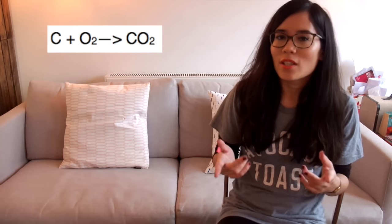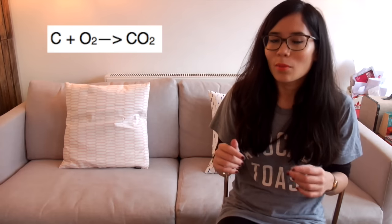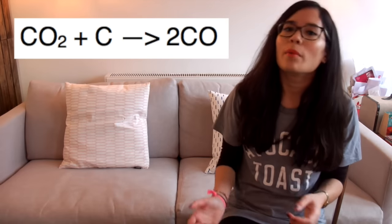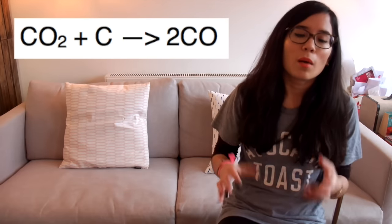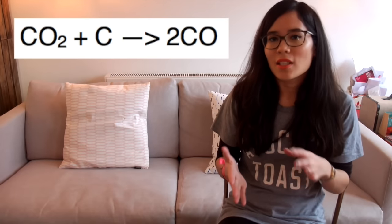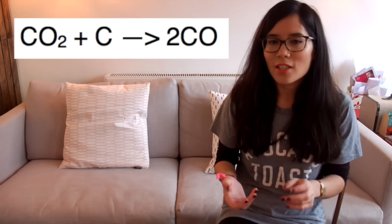It's important that you learn these equations — the balanced symbol equations especially — because you might be asked that very easily in the exam. Then the carbon dioxide reacts with more carbon in order to form carbon monoxide, and carbon monoxide is our reducing agent.